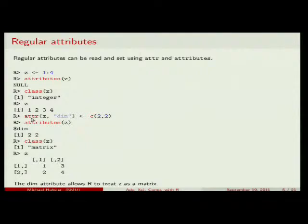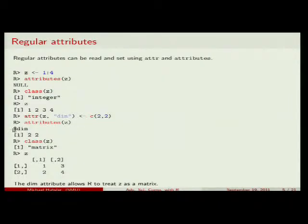I can use the function attr() to create and attach attributes to an object. I give the attribute dim (for dimensions) to c with the values c(2,2). Now c has an attribute dim with values two and two. If I look at class(c), it's no longer integer — it's now matrix. So by adding a dimension attribute, I changed what type of object it is.